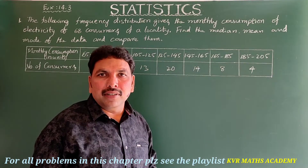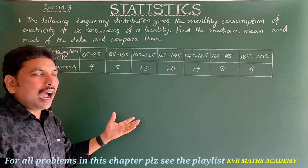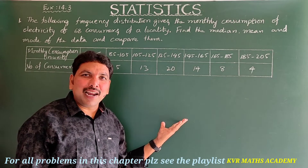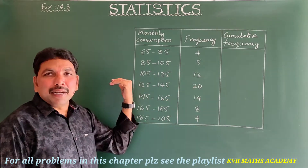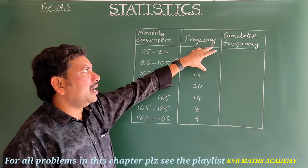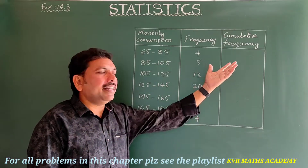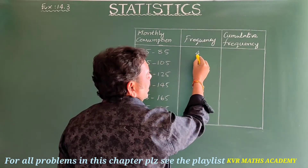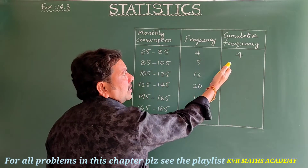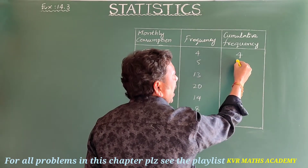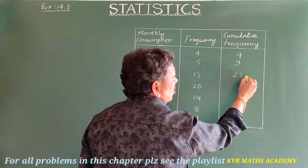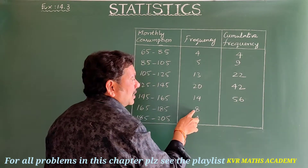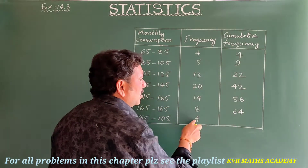For this data we have to find mean, mode, and median. I will draw the table first and then explain. For finding median, we need to find the cumulative frequency. The cumulative frequencies are: 4, then 4+5=9, then 9+13=22, 22+20=42, 42+14=56, 56+8=64, 64+4=68.